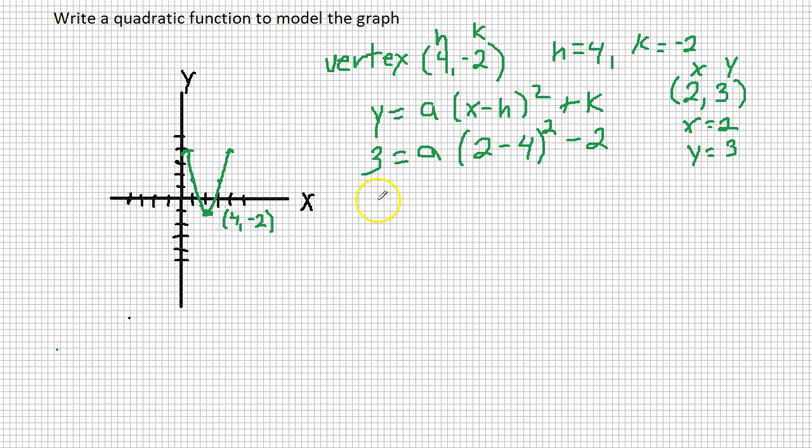Bring down the 3 equals a, 2 minus 4 is negative 2. So I have negative 2 being squared minus 2. Well, negative 2 squared is positive 4. 4 times a is 4a, so 3 equals 4 times a minus 2. So if you add 2 to each side, 3 plus 2 is 5, equals 4a, divide by 4, and a equals 5 fourths.